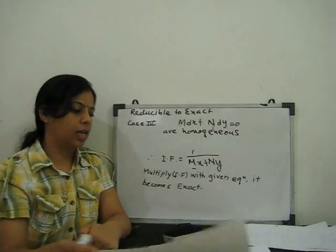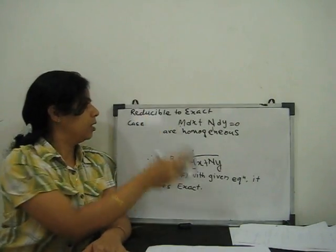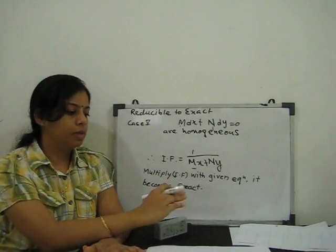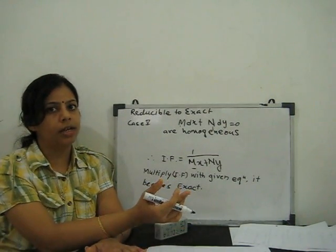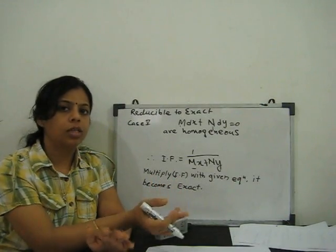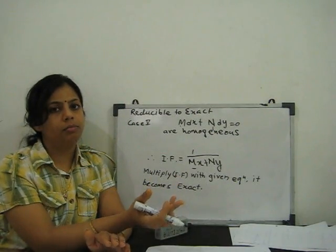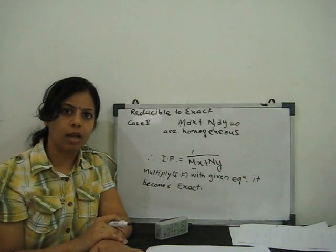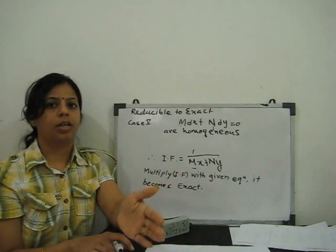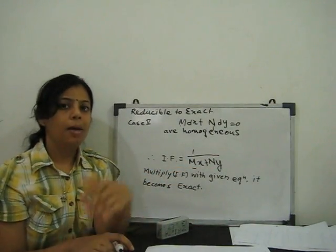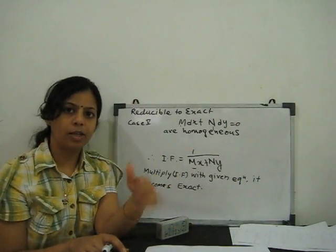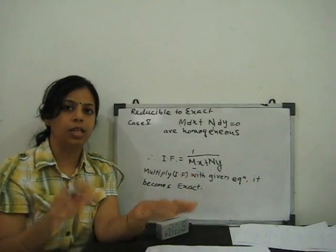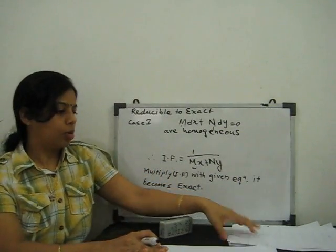The fifth method is finding the integrating factor by inspection. Inspection means we look at the question and decide what the integrating factor should be — what term we need to divide so the equation becomes exact. There is a long formula list of about 15 to 17 formulas in many books. It is not easy to memorize all of them, but when you practice, you can easily determine which integrating factor applies.